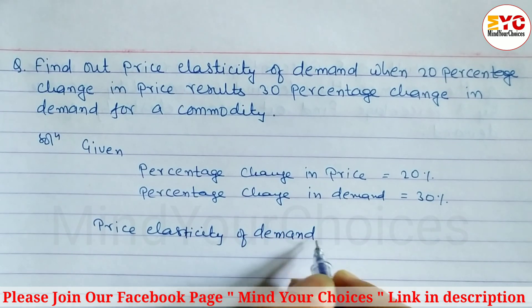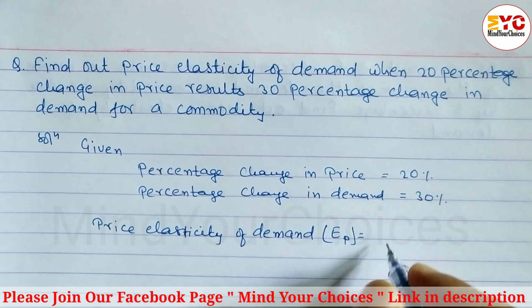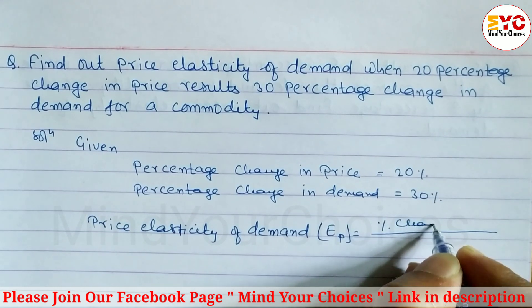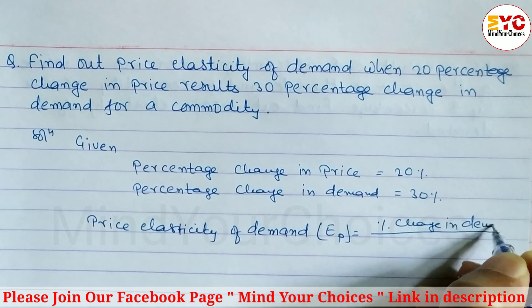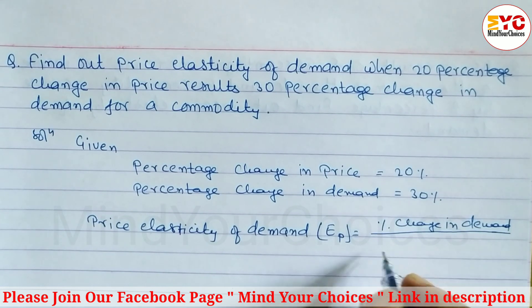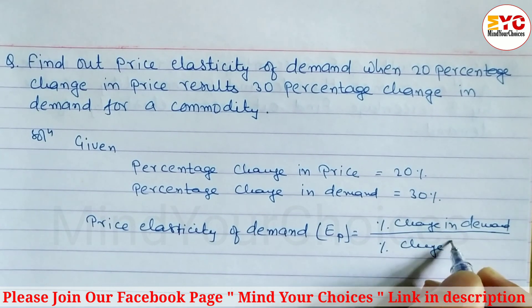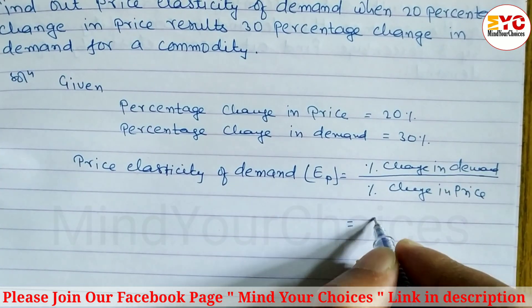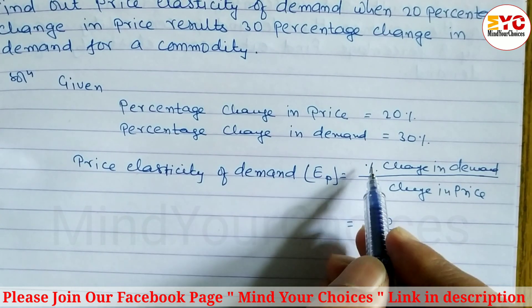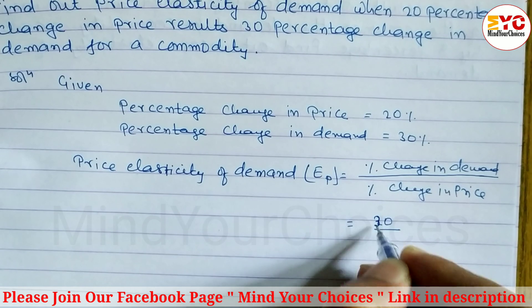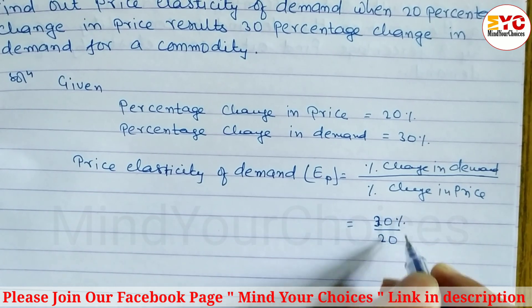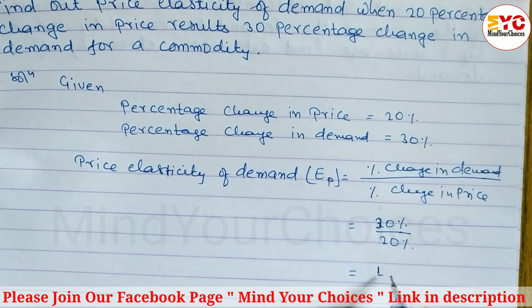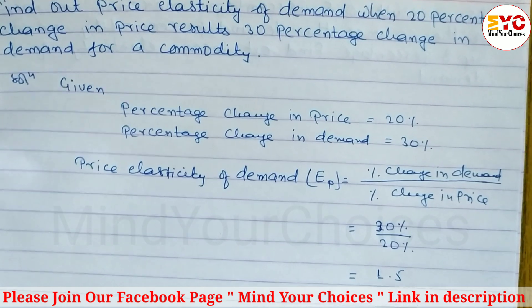Price elasticity of demand, denoted by Ep, is calculated using the formula: percentage change in quantity demanded divided by percentage change in price. Substituting the values, that is 30% divided by 20%, we get an answer of 1.5.